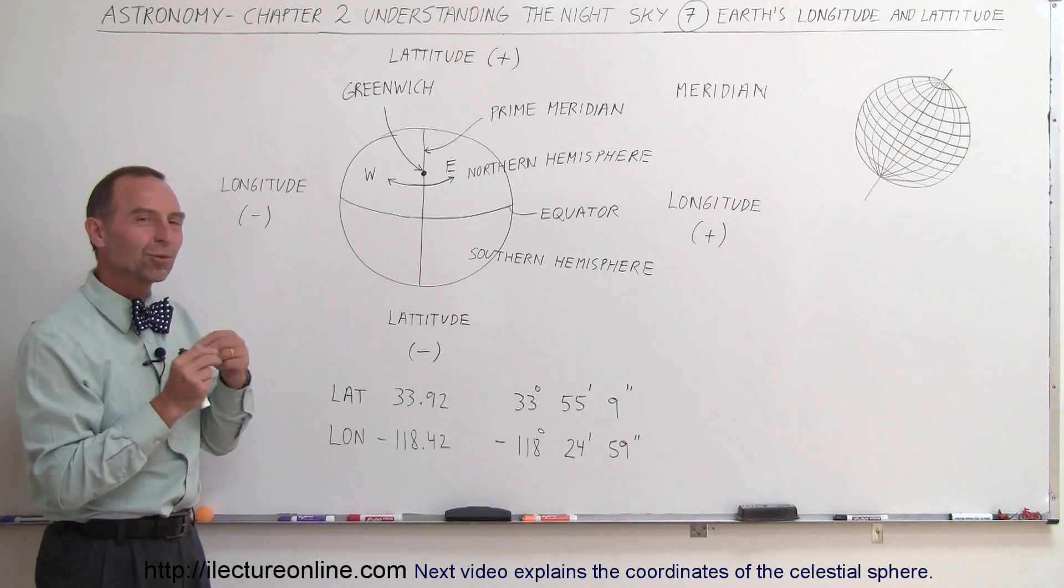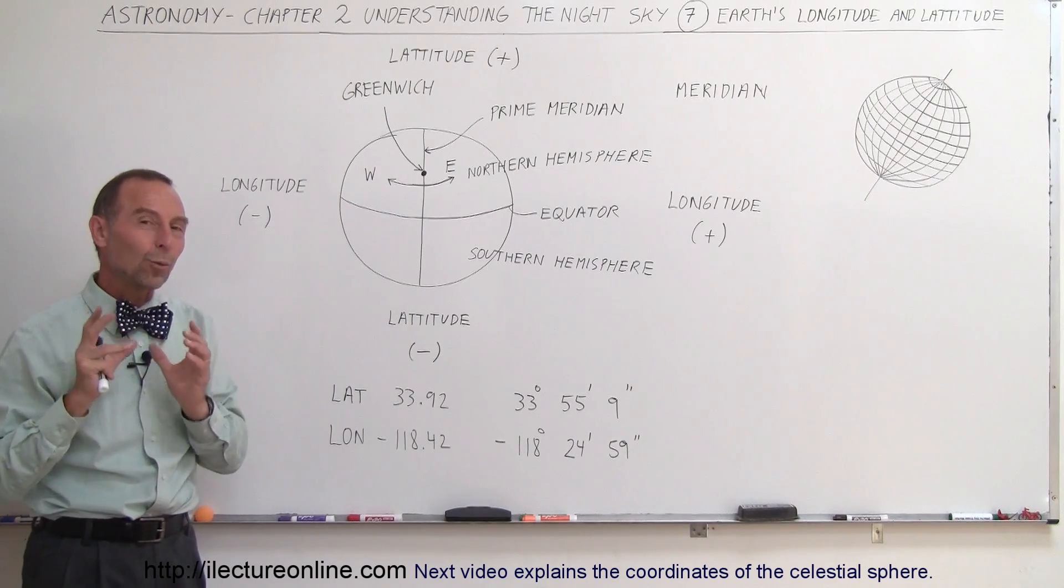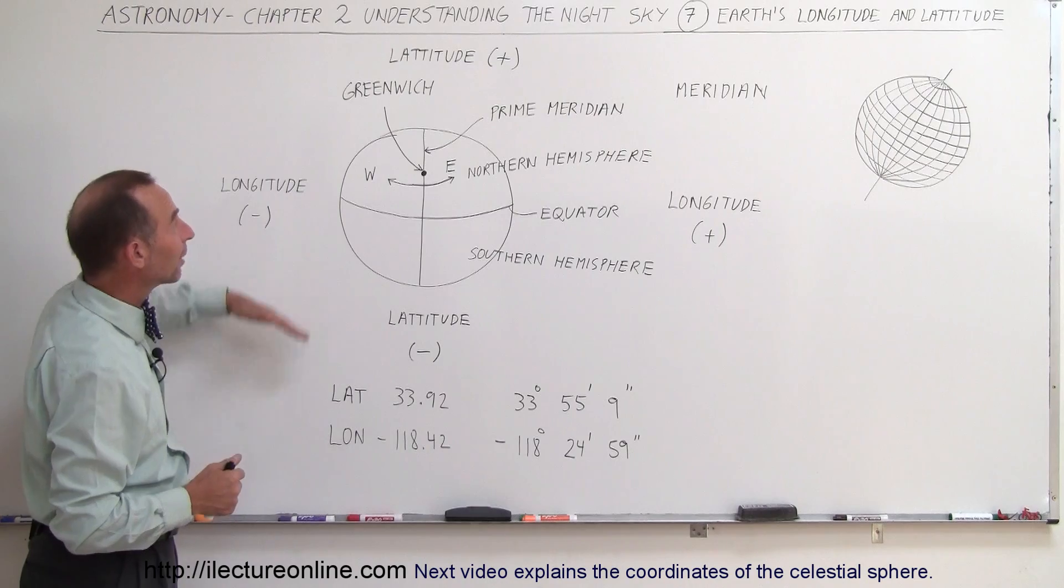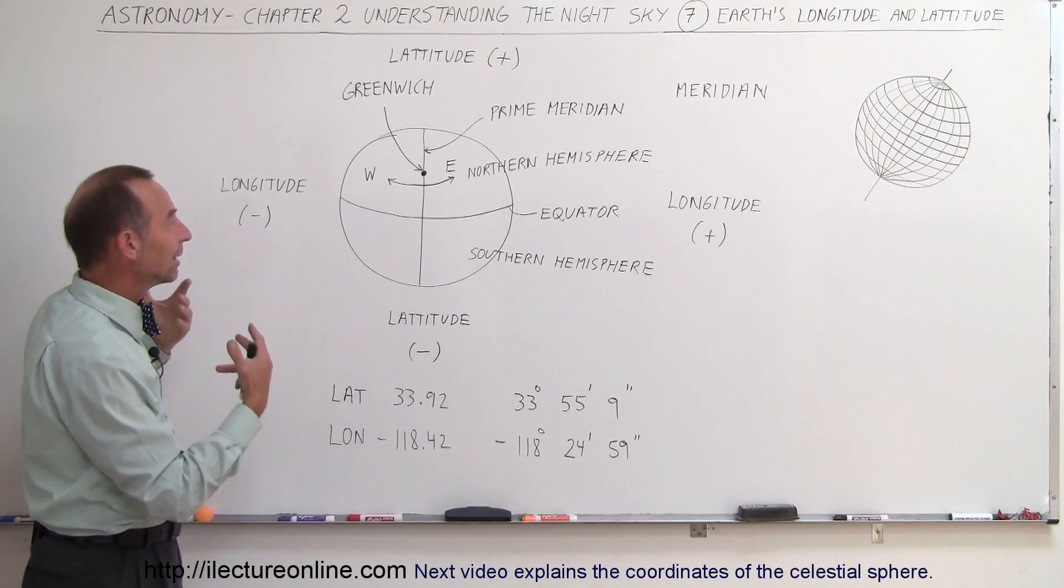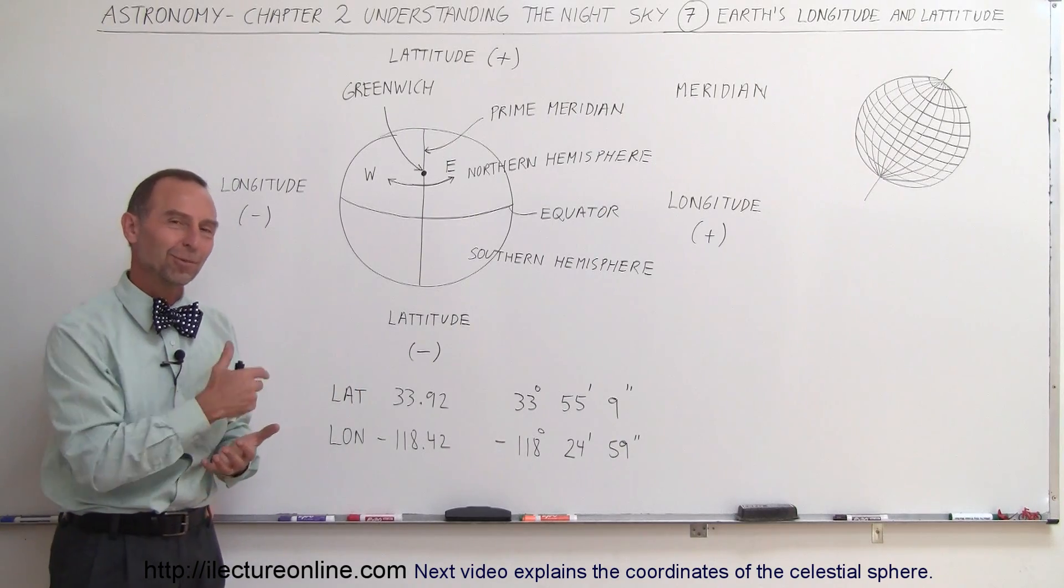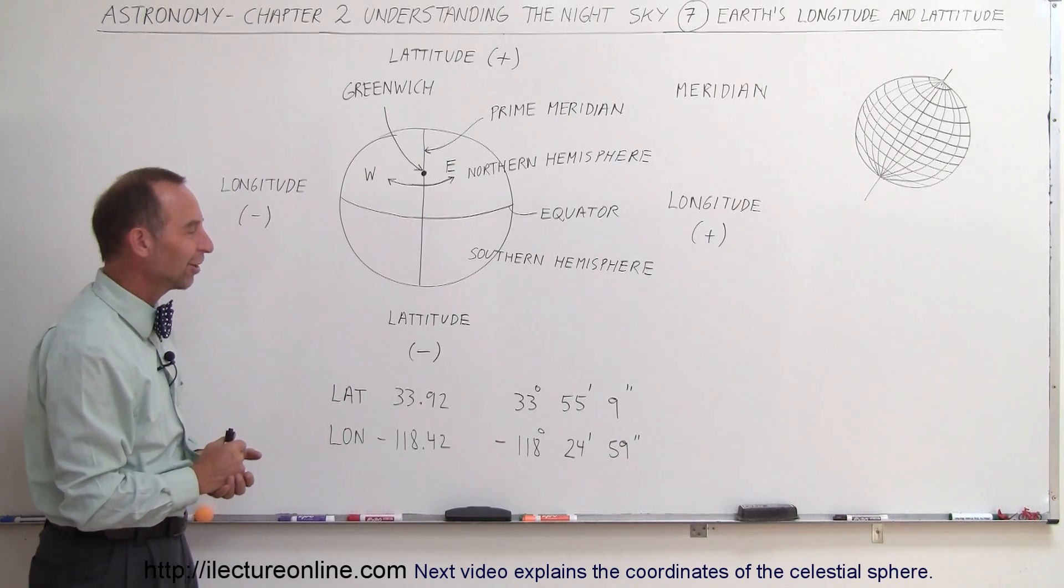For that, we have to have some sort of adjustment. We call that right ascension. I'll show you how that works. It actually works pretty beautifully. Here is the way we look at the coordinate system on the Earth, and then we'll apply that to the coordinate system of the celestial sphere and see the similarities there.